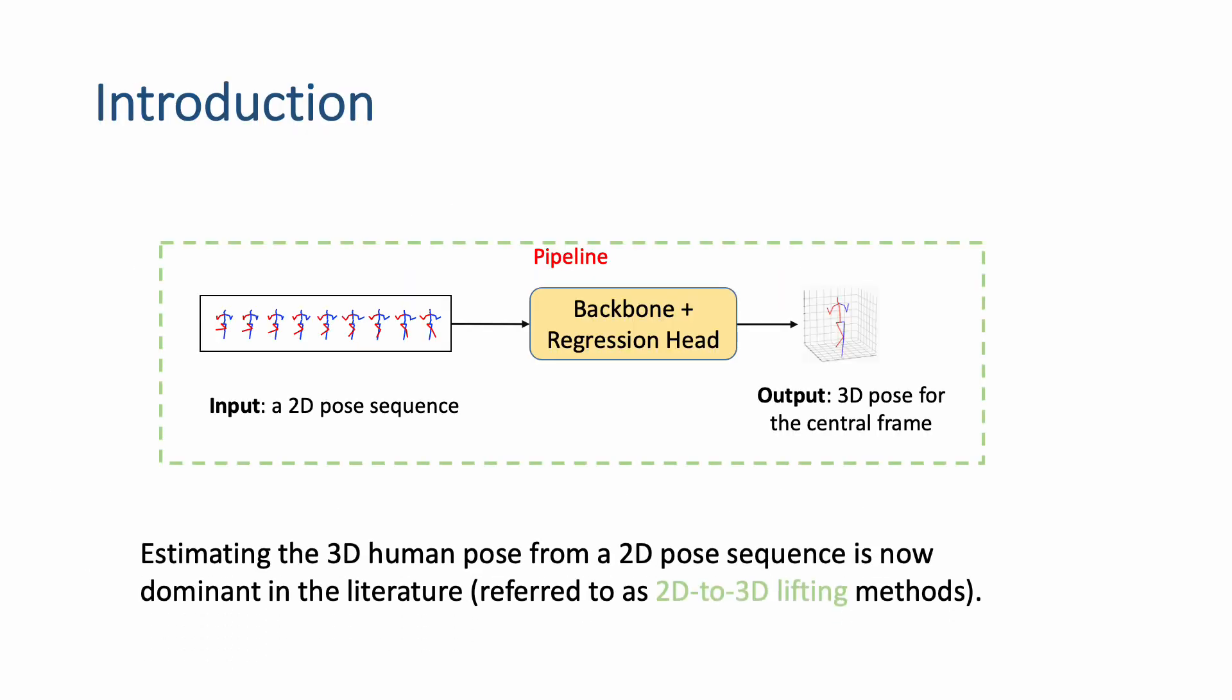The dominant pipeline in the literature estimates the 3D human pose from a 2D pose sequence. This is challenging because 2D to 3D lifting inherently suffers from ambiguities. To mitigate this issue, existing methods use extremely long input sequences.